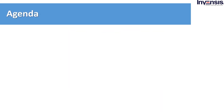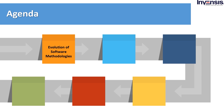Let's see the agenda for today. We will look into the evolution of software methodologies — specifically two popular methods, namely the waterfall model and agile methodology. We will learn their definitions and limitations respectively. The limitations of these two methodologies gave birth to a new methodology called DevOps, and how it overcame all the limitations that waterfall and agile had.